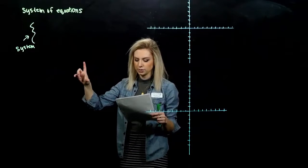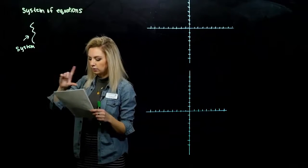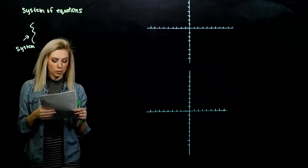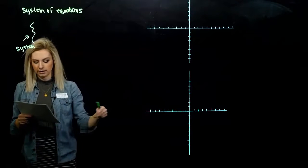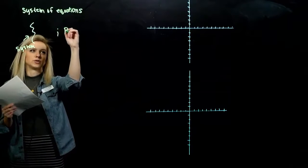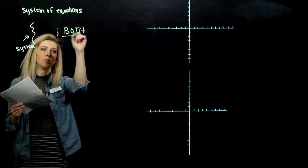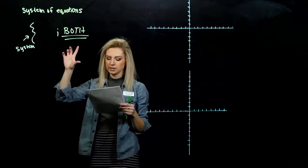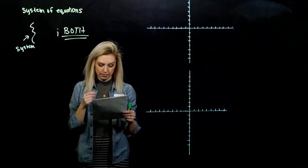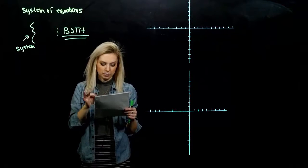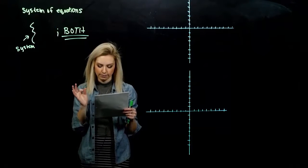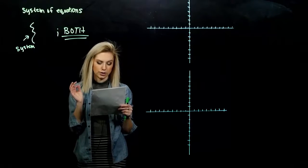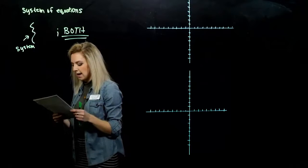That first example, the little brackets always mean a system in this class. If you see that notation, that's just what it means. If there aren't any words and you just see that bracket with two equations, we're solving that system. So that first system that's given, we have two lines and we're looking for a solution.